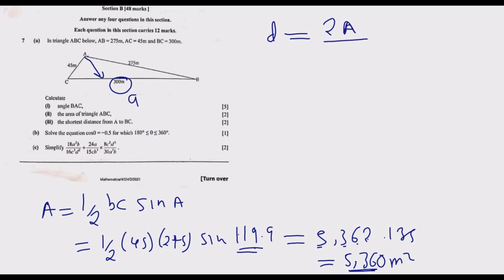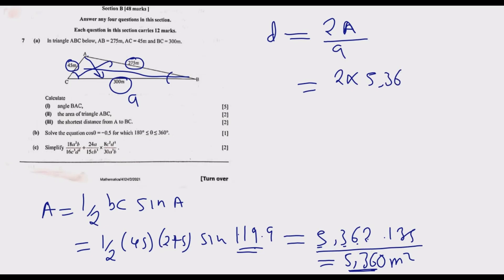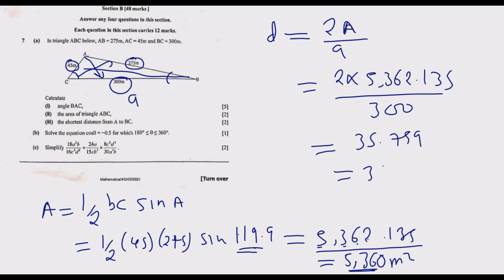So we divide 2 times the area by side a (300). We use this approach to maintain our degree of accuracy, though the difference would be minimal since we're working to three significant figures. When we simplify, we get 35.759, which is 35.8 meters to three significant figures. That is the shortest distance from A to BC. Remember, strategy is better than strength.